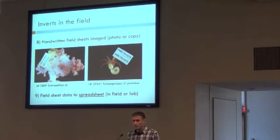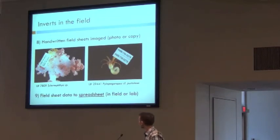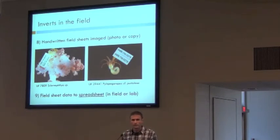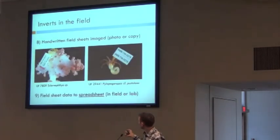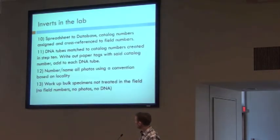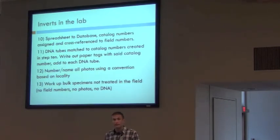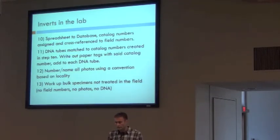The field sheets can be handwritten, and if they are, they typically take photographs of them in the field to back them up. If entered directly into the spreadsheet, they make another copy and save it to an external hard drive. When they return to the lab, the spreadsheet data is imported into their database, and catalog numbers are assigned to each of those specimens, linked to the field numbers.